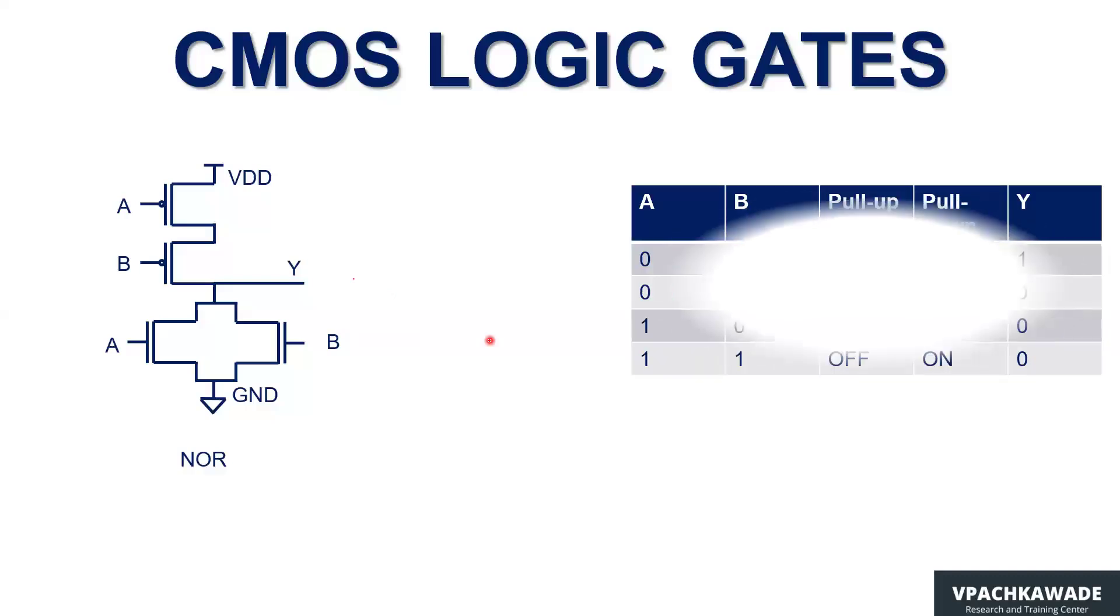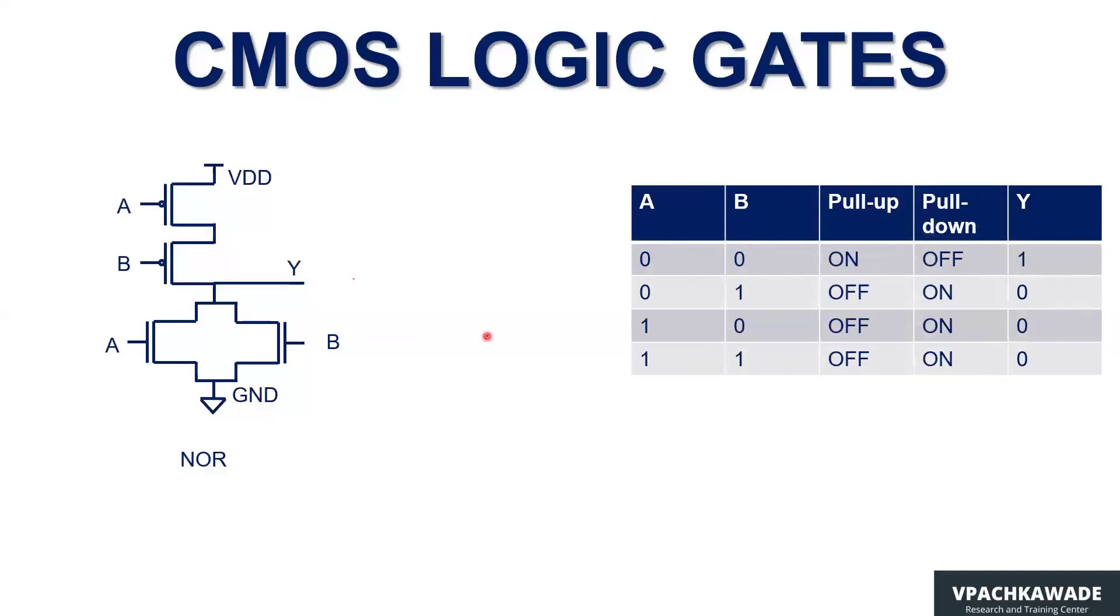So let me bring you to the truth table of this NOR logic. You have two inputs A and B. Therefore, there are four possible combinations 00, 01, 10, 11. And accordingly, you have to understand what is the output logic and accordingly, you would understand how the pull up and pull down network, whether they will be on or off.